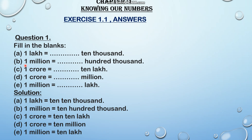Now the second question: 1 million is equal to dash 100,000. The answer is 10 — so you can write 10 here.